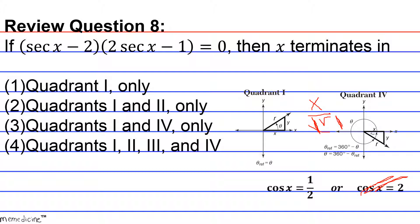Now we have our cosine of x and we know that it's either going to be positive in quadrant 1 or quadrant 4, because, as I said before, I'm going to repeat this one more time. The x coordinate is positive in these quadrants. Therefore, the correct answer is going to be answer choice 3, quadrants 1 and 4 only. All right? Okay. Good luck.